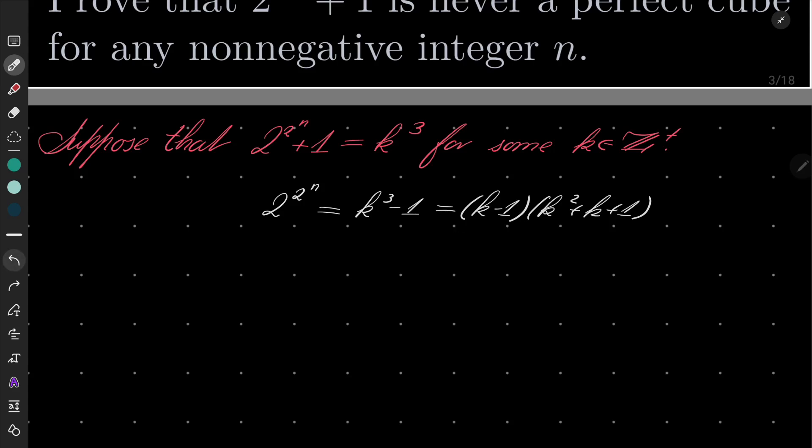And now we see that we have a product of two integers which is a power of 2, and that implies that both k minus 1 and k squared plus k plus 1 must be some powers of 2.